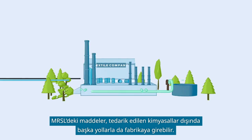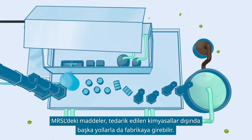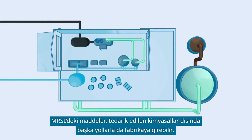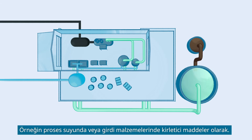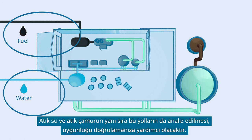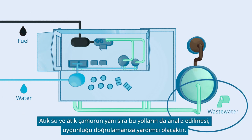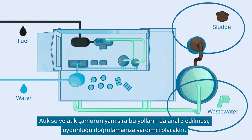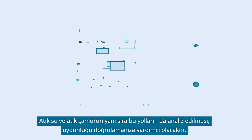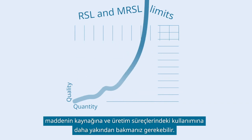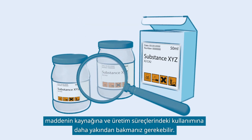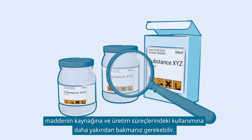Substances on the MRSL may also enter the factory through pathways other than the supplied chemicals — for example, as contaminants in process water or input materials. An analysis of these pathways, as well as of wastewater and sludge, will help you to verify conformance. In case substances are found beyond the limits on the RSL and MRSL, you may need to take a closer look at the source and use of the substance in the production processes.